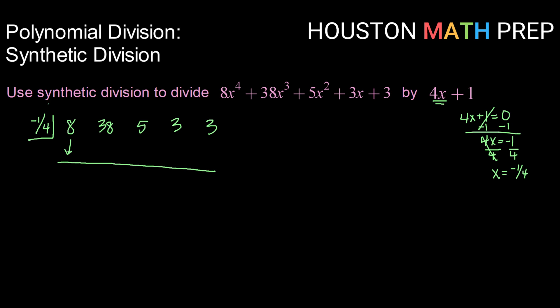The process starts out the same way. We'll bring down that 8, then do our multiply and add down process. Negative 1 fourth times 8 is negative 2. Add down: 38 plus negative 2 is 36. Negative 1 fourth times 36 is negative 9. Add down: 5 plus negative 9 is negative 4.